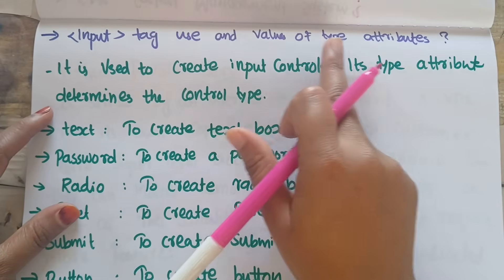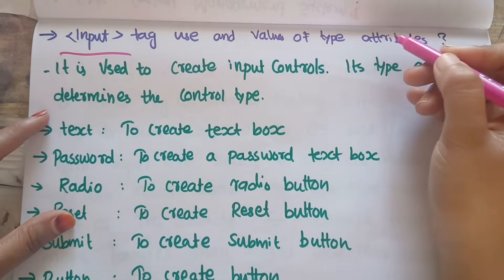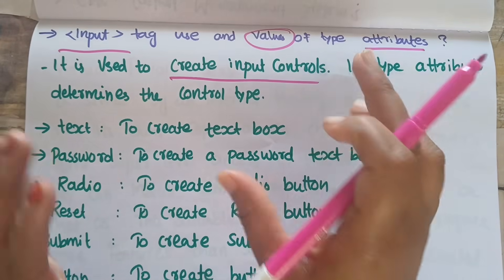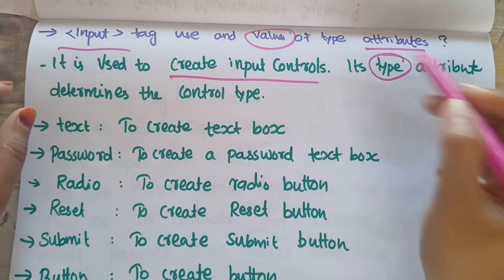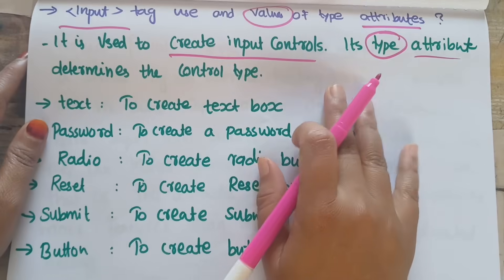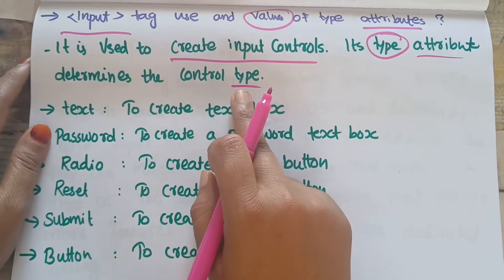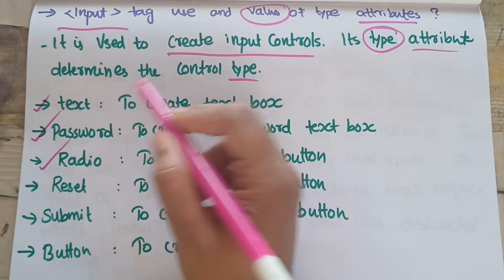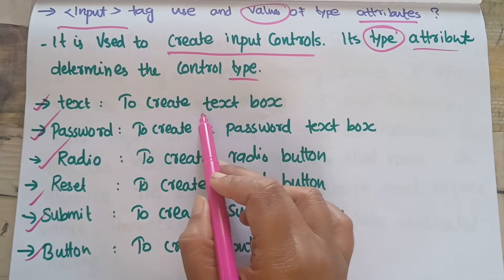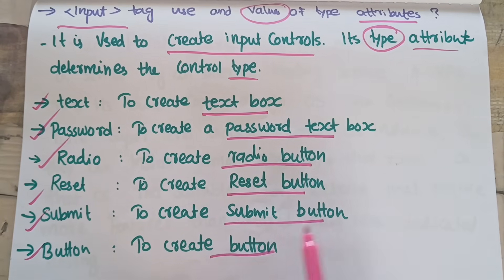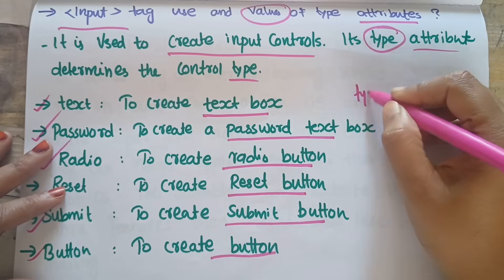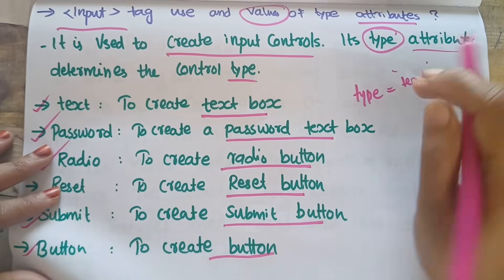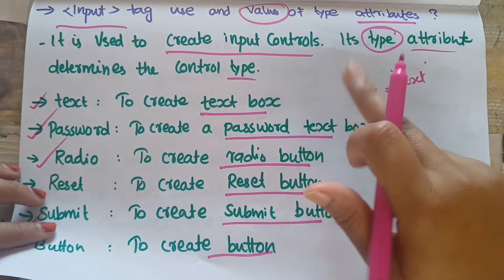What is the use of the input tag and its attribute values? The input tag is used to create input controls on a website. Its type attribute determines the control type. Type values include text, radio, and submit button. For example, type='text' creates a text box. These are the input tag attribute type values.